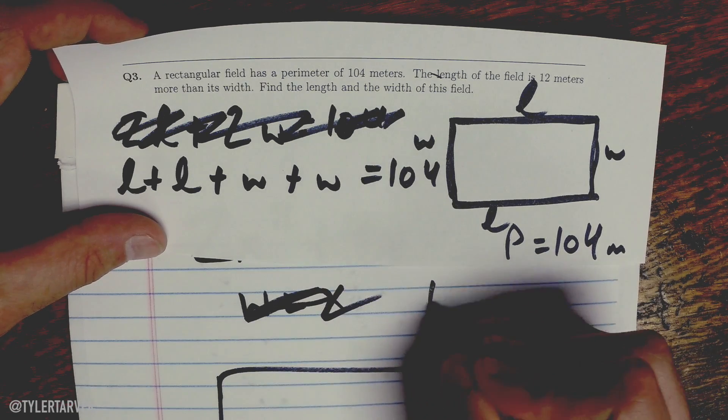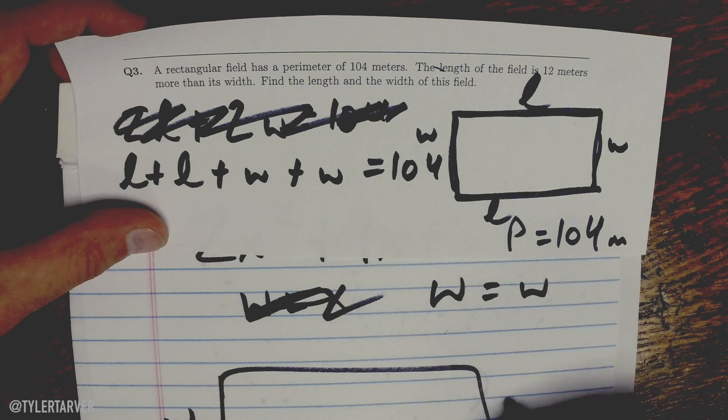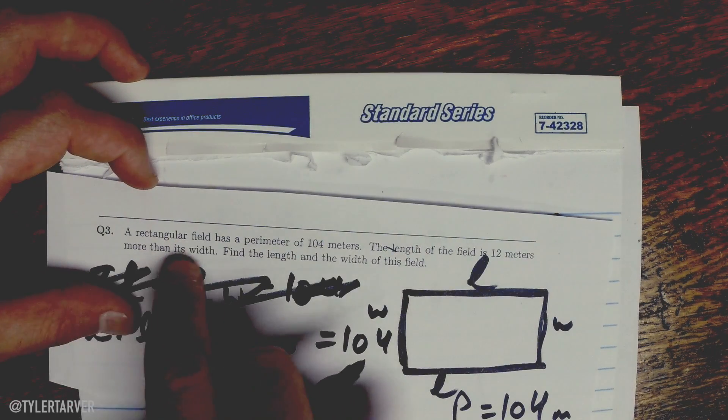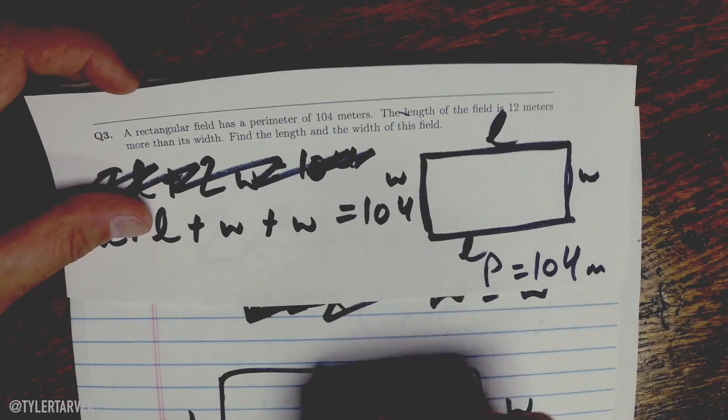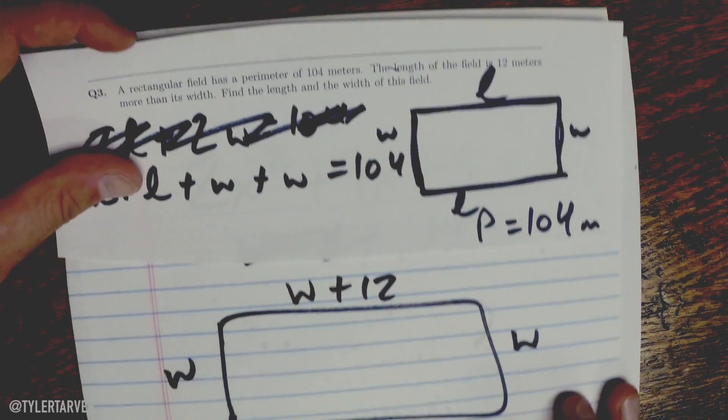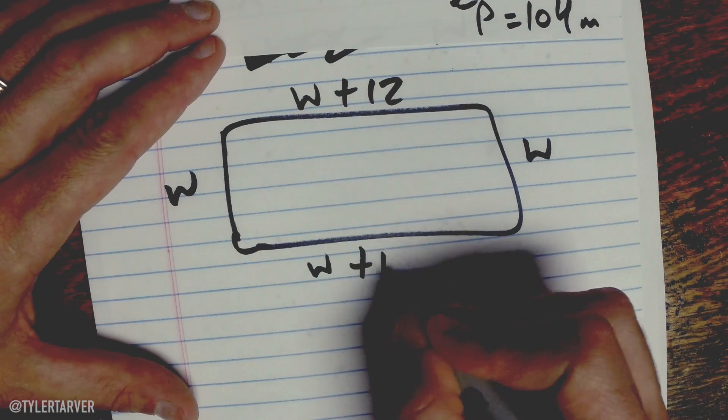Okay, well let's just put width is W. Say width is W, that makes sense. Okay, so the width is W, W. Now, I know my length is 12 meters more than the width. So I know my length is my width plus 12. That's the key right here ladies and gentlemen. That's how you work these problems. Width plus 12.